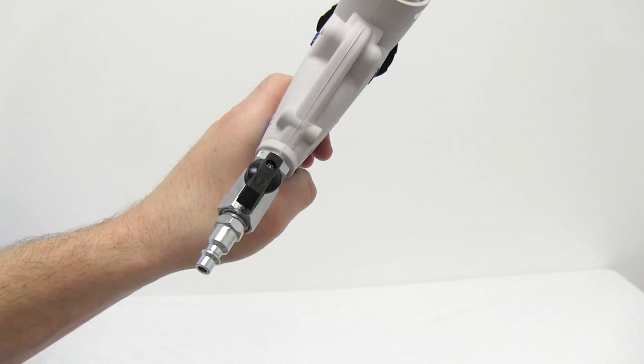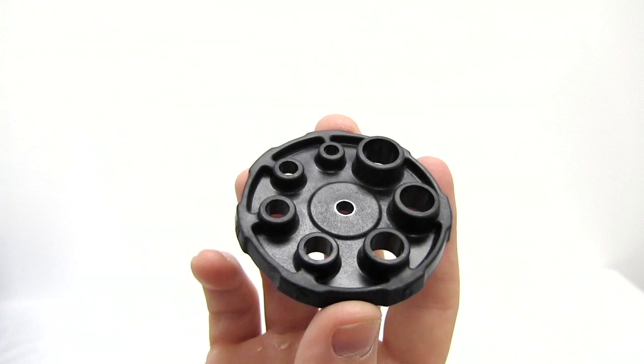The air inlet features a ball valve to dial in the desired airflow. This also allows you to shut off the air flow completely if adjustments to the gun are needed.